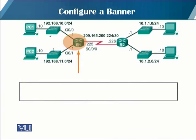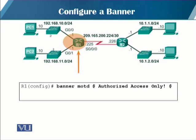To configure the banner, you use the command 'banner motd' followed by the message string. This message is shown when an unauthorized user tries to access the router, or when the username or password provided does not meet the access control list requirements. The message displayed is 'Authorized Access Only'.